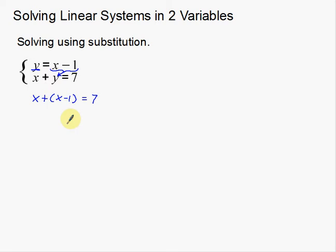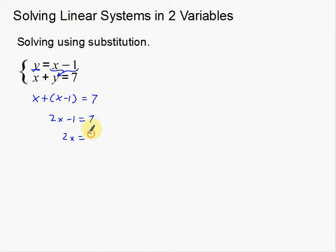Now you have a single variable equation and you just need to solve it. I put parentheses here, but I don't necessarily need them — I'm not multiplying by anything out front. I like to have the parentheses there to emphasize the substitution. Combining like terms on this side, I get 2x minus 1 equals 7. Then I add 1 to both sides and divide everything by 2, so I get x equals 4.